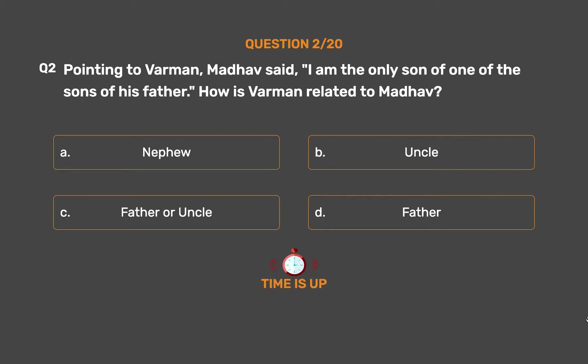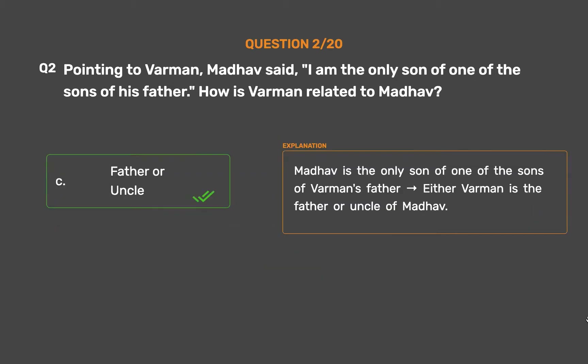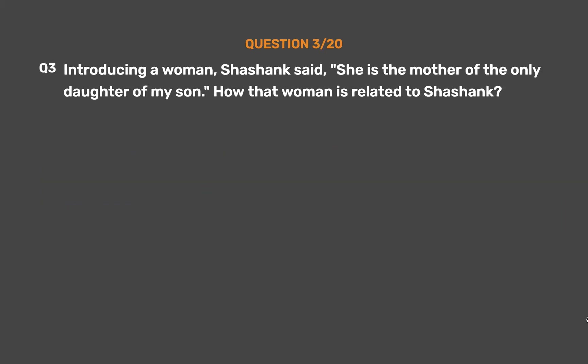The correct answer is Option C: Father or Uncle. Madhav is the only son of one of the sons of Varman's father. Therefore, either Varman is the father or uncle of Madhav.